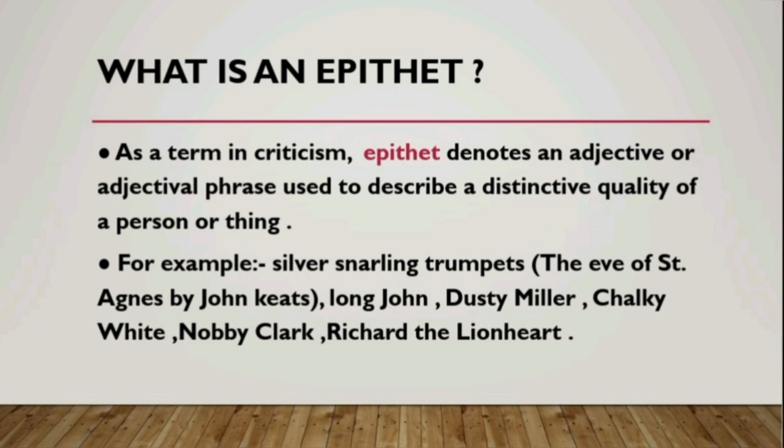For example, 'silver snarling trumpet' — the trumpet is described as 'silver snarling,' which is an adjectival phrase. This example is from 'The Eve of St. Agnes' written by John Keats. Similarly, we have other examples: 'Long John' — where 'Long' is the epithet; 'Dusty Miller' — where 'Dusty' is the epithet; 'Chalky White' — where 'Chalky' is the epithet; and 'Noby Clark' — where 'Clark' is the noun and 'Noby' is the epithet.